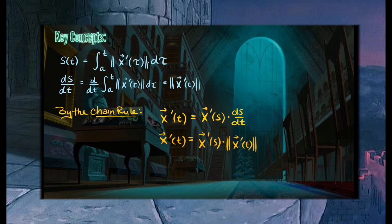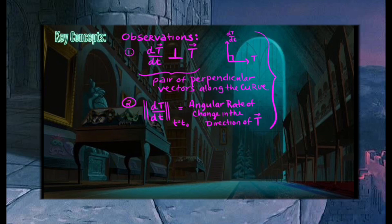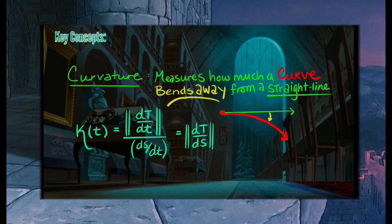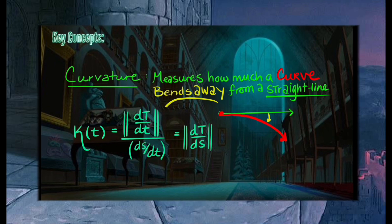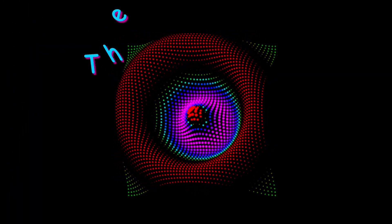We then talked about parametrizing by arc length and how that is a better parametrization to use, and that using the chain rule we could define a unit tangent vector — a tangent vector of length one. We made observations about the derivative of a tangent vector being perpendicular to a curve, creating reference frames to tell how much a curve bends, which is really how much a curve bends away from a straight line.